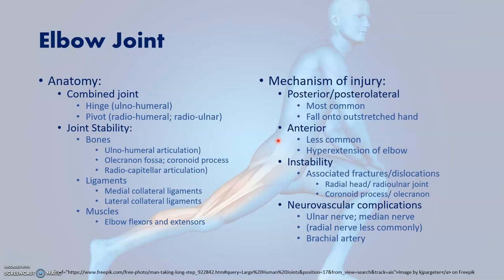Thinking back to what we said about stability: the structures that provide stability, if fractured or dislocated, can lead to instability — so fractures of the radial head, fractures of the coronoid process, and fractures of the olecranon. The commonest nerve affected by elbow dislocation is the ulnar nerve, then the median nerve; the radial nerve can be affected as well but less commonly. The brachial artery can also be affected, particularly if there is a lot of swelling and compartment syndrome.